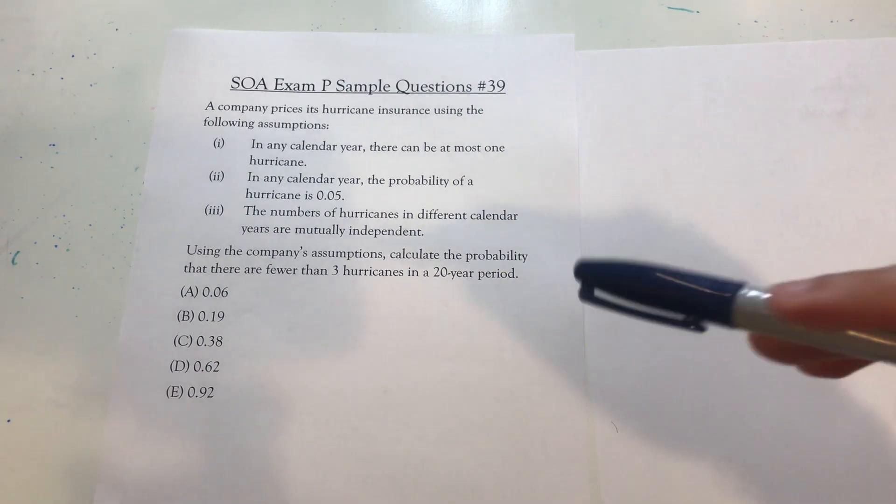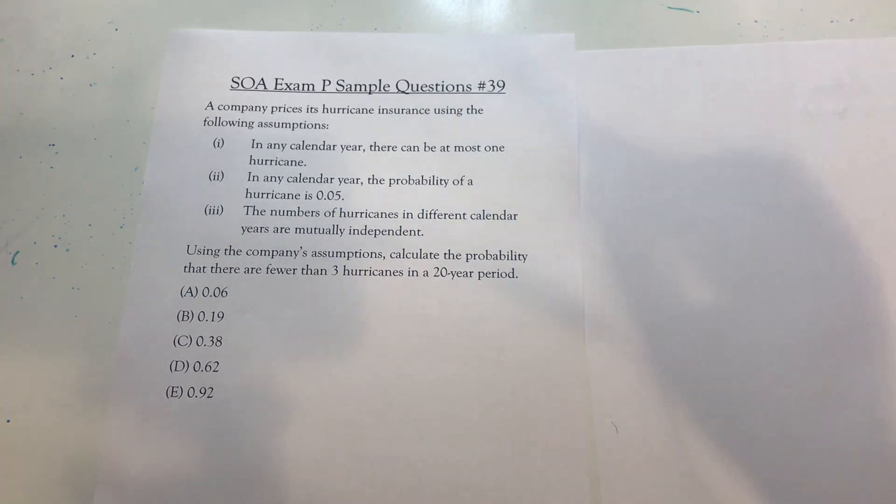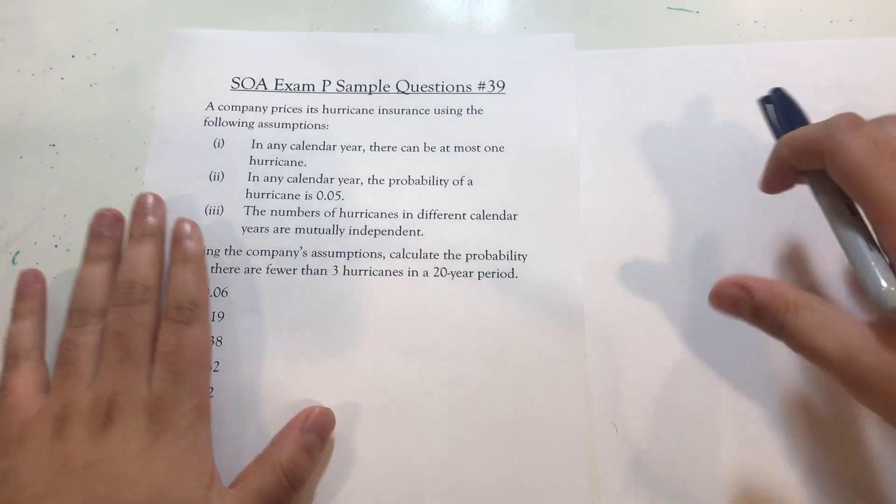Using the company's assumptions, calculate the probability that there are fewer than three hurricanes in a 20-year period.